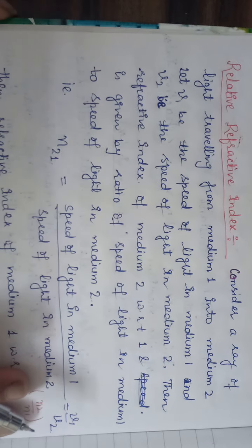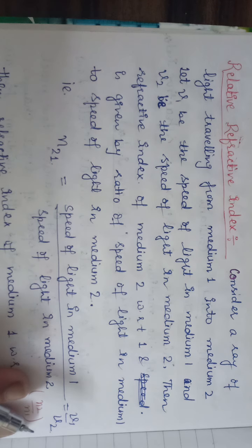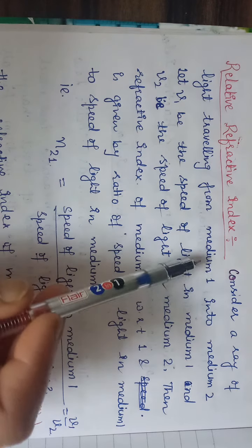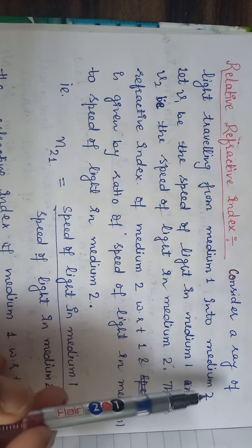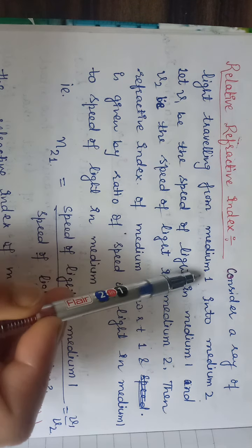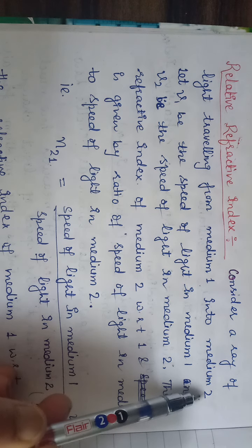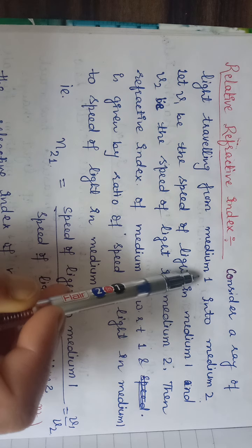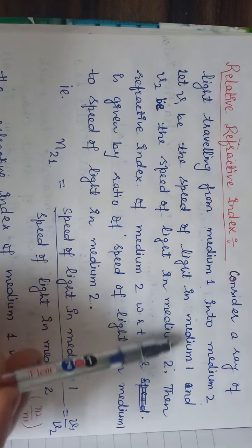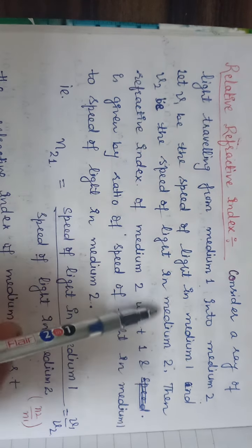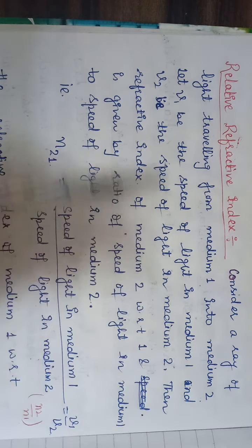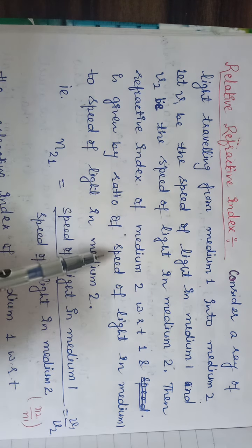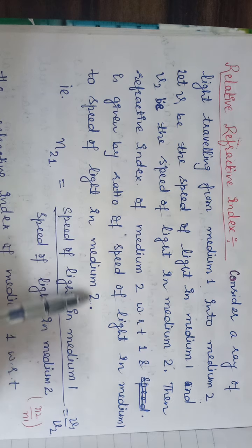The second type of refractive index is relative refractive index. Consider a ray of light traveling from medium one into medium two. Here we are taking two mediums — one medium may be water and the other may be glass. It is not compulsory that in the numerator we take only the speed of light in vacuum or air. Let v1 be the speed of light in medium one and v2 be the speed of light in medium two.